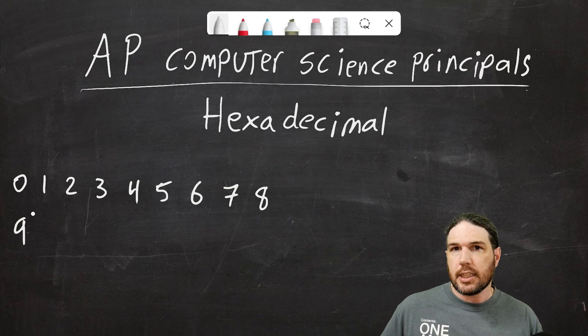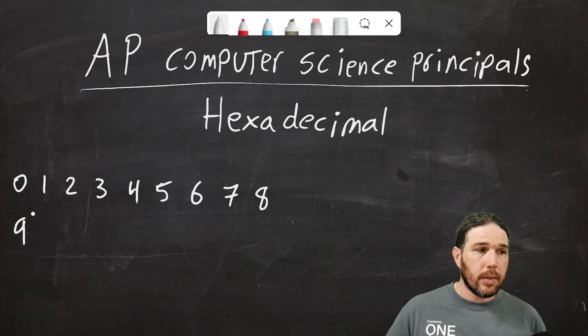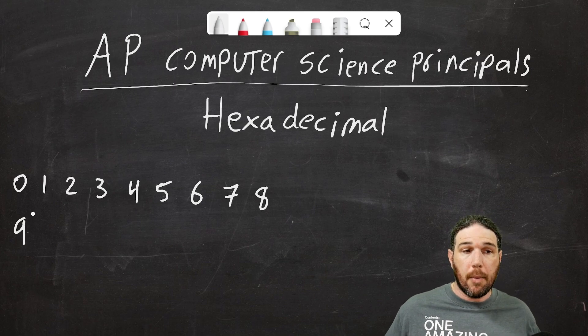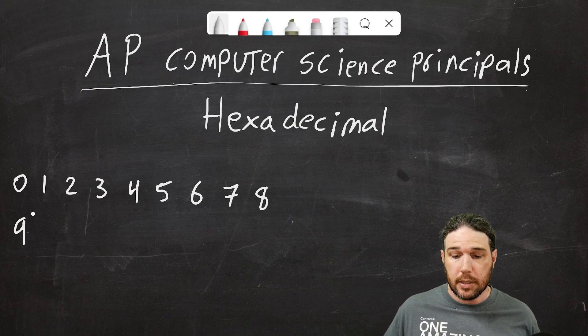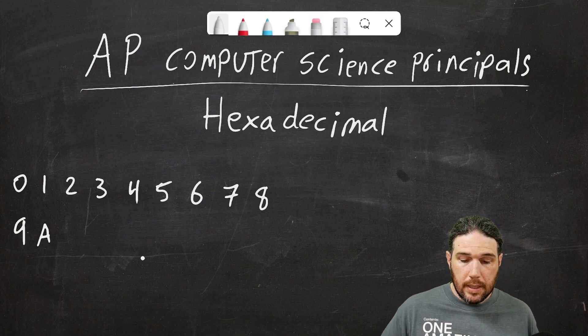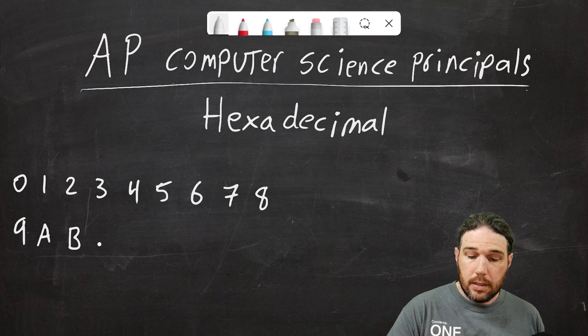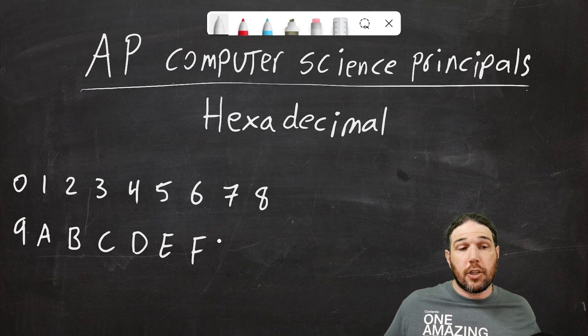But in hexadecimal we need 16 separate symbols to fill one spot before we move on to the next place value. So what are we going to do? We could just come up with symbols for 10, 11, 12, other cultures have done that in the past, but I think what we're going to do is take advantage of another widely known pattern of symbols, the alphabet. So we're just going to go ahead and say that 10 is A. That makes 11 B, 12 is C, and so on. 13 is D, 14 is E, 15 is F, and that's all we need.